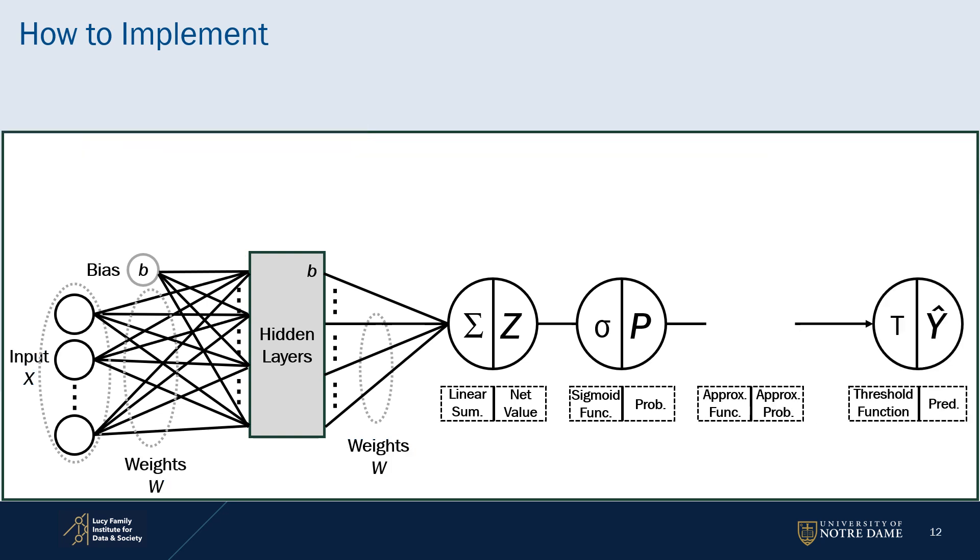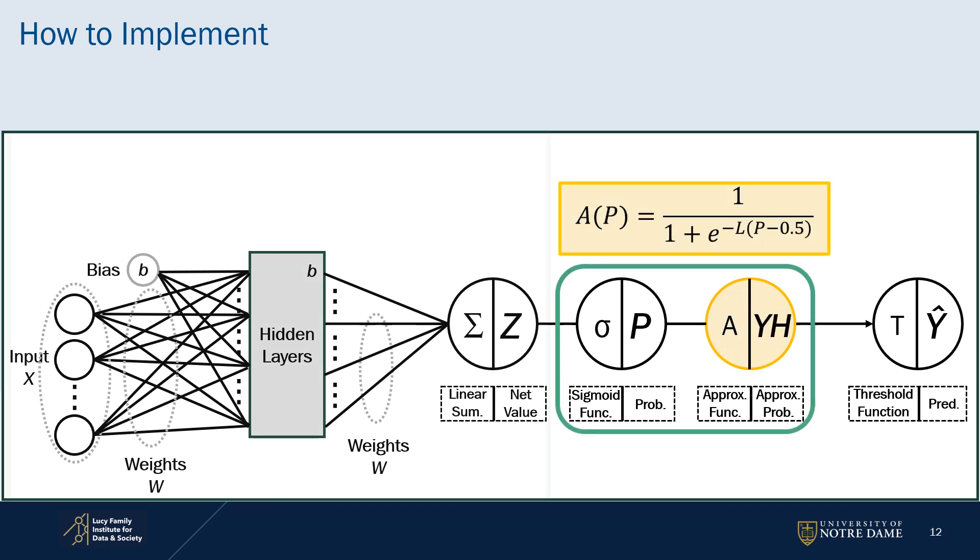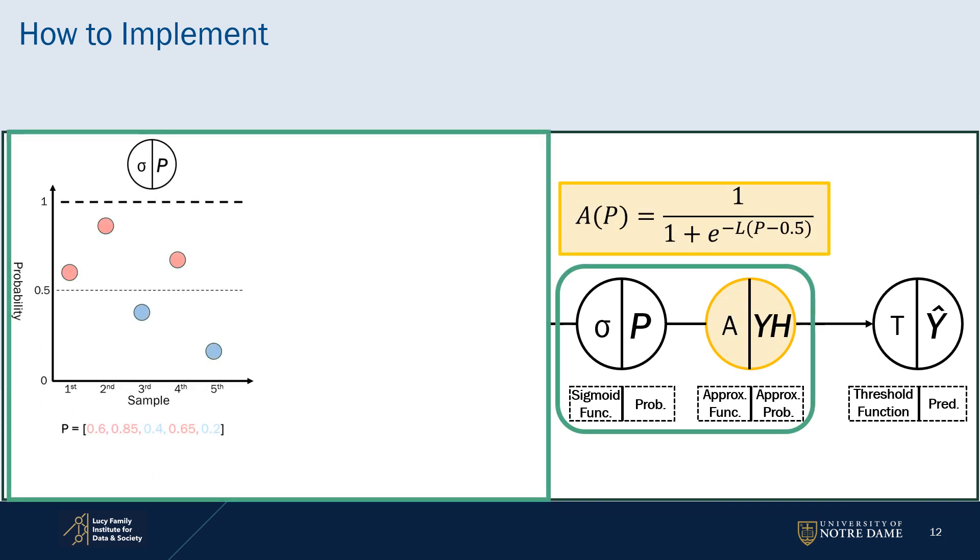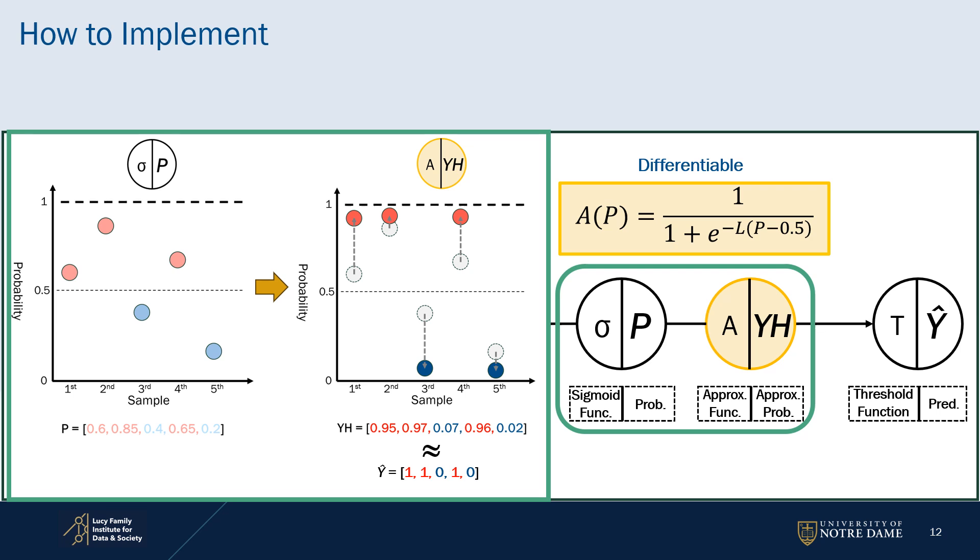We adapted an additional step called approximation. In this step, the approximation function generates the amplified probability, yh, which can be considered the predicted label y-hat. Moreover, the approximation function is differentiable.